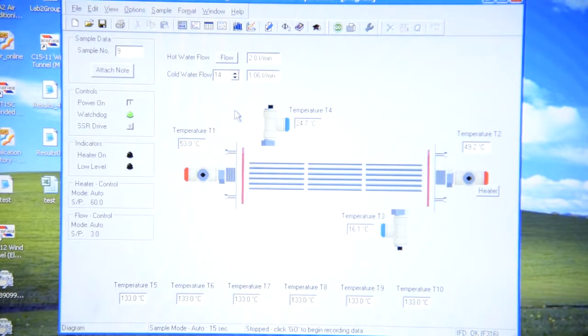After this, you should proceed and make cold water flow equal to 2 liters per minute.